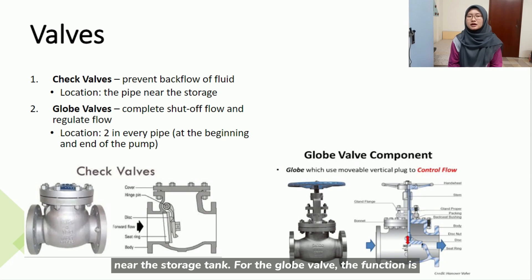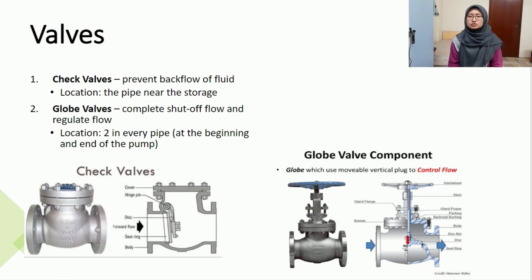For the globe valves, the function is as a complete shut off of flow and regulating flow. Two of the globe valves are installed in every pipe. Location is at the beginning and end of the pipe.